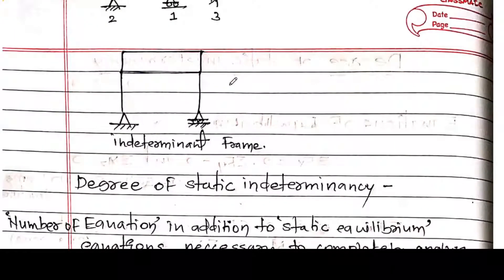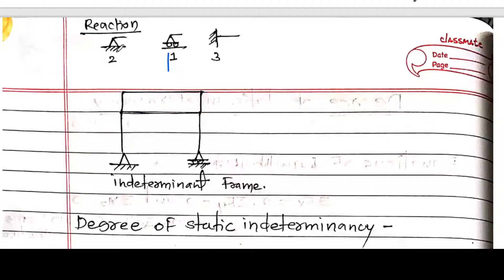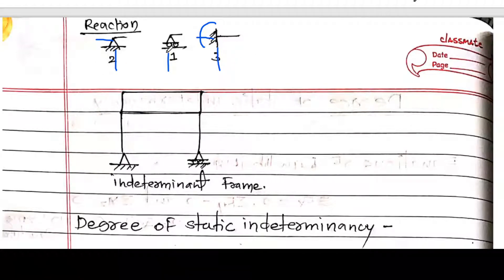This is also an example of an indeterminate frame. For students who have forgotten the basic concepts: a hinge support offers 2 reactions, a roller support offers 1 reaction, and a fixed support offers 3 reactions. Roller support offers only a vertical reaction, hinge support offers vertical as well as horizontal, and fixed support offers vertical, horizontal, and a moment reaction. Please remember this — it is very useful for this chapter and for entire structural analysis.